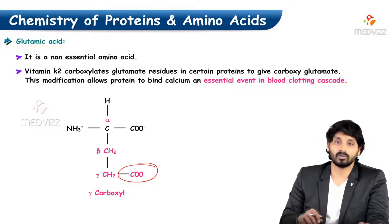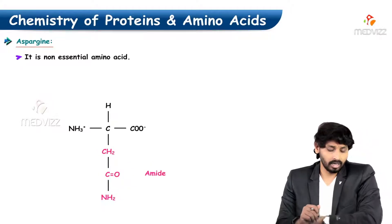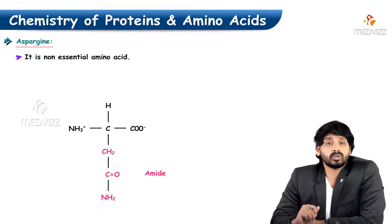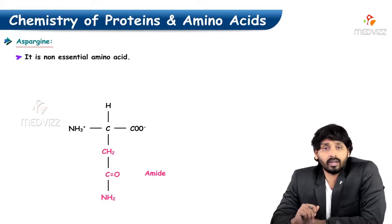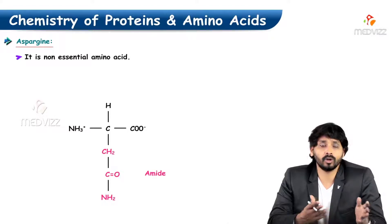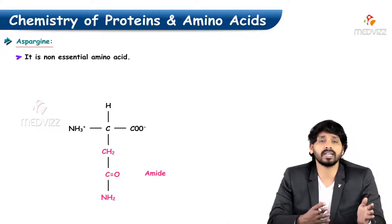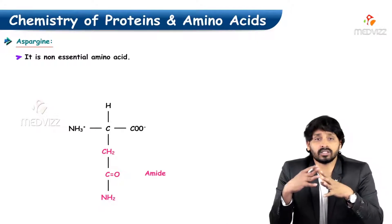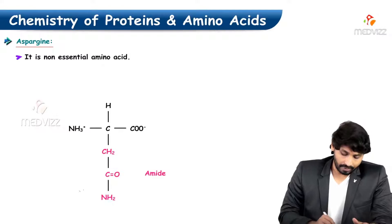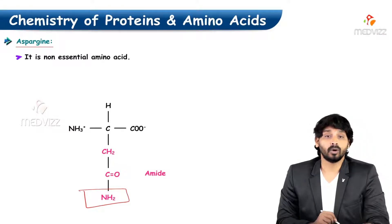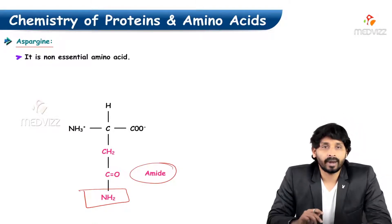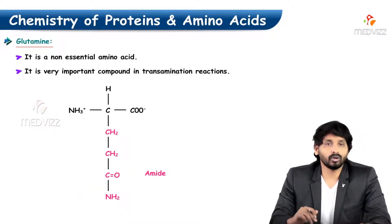Next, asparagine is also a non-essential amino acid, but it is actually a basic amino acid. While acidic amino acids have an extra carboxylic group compared to the regular one, amino acids carrying an extra amino group are classified as basic amino acids. In asparagine, the extra amino group is present within an amide linkage.